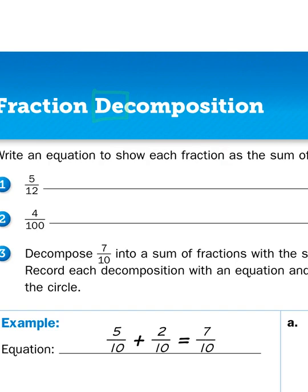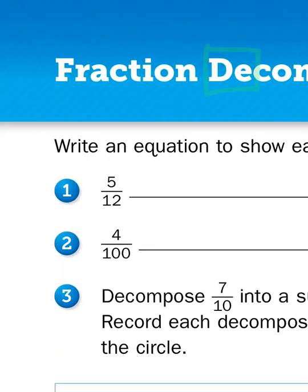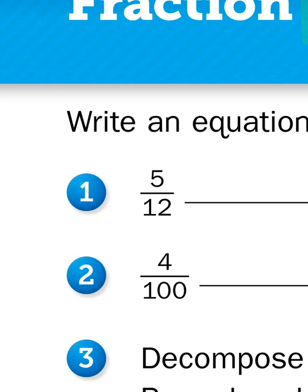What do these science terms have to do with math? Well, when we decompose a fraction, all we're really doing is taking apart that number and breaking it down into smaller parts. Just a quick refresher: we have two parts to a fraction — a numerator, which is the top number, and a denominator, which is the bottom part. The numerator tells us how many parts, and the denominator reminds us how many parts were possible in all. So a fraction of 5 twelfths represents 5 parts out of a total of 12 parts.